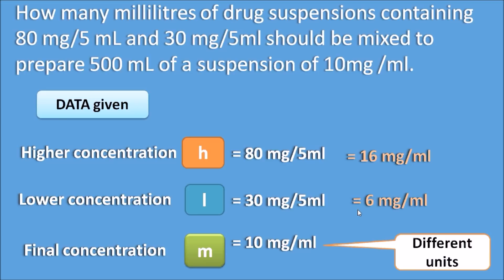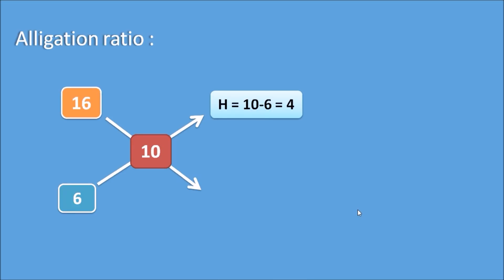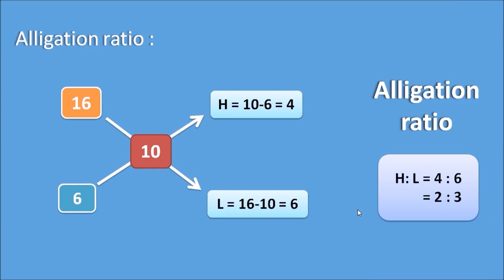Now we have two concentrations: 16 mg per ml and 6 mg per ml, and we need to prepare 10 mg per ml. Applying allegation: higher concentration is 16, lower concentration is 6, and intermediate concentration is 10. So H is equal to 10 minus 6, which equals 4, and L is equal to 16 minus 10, which equals 6. The allegation ratio is 4 is to 6, that is 2 is to 3. Two parts of the higher concentration should be mixed with three parts of the lower concentration.